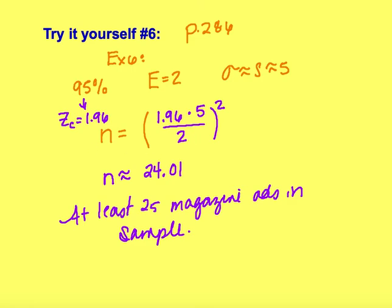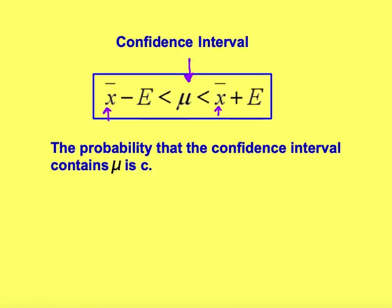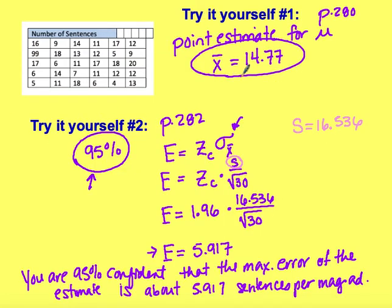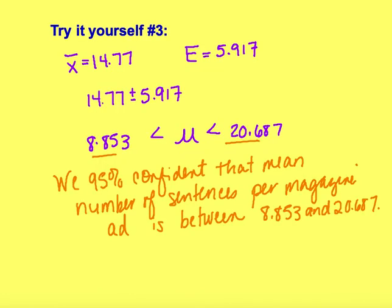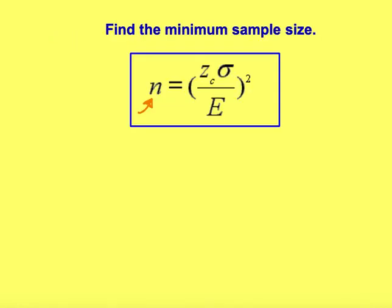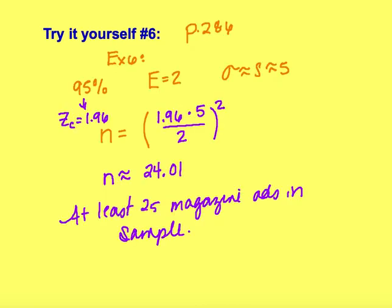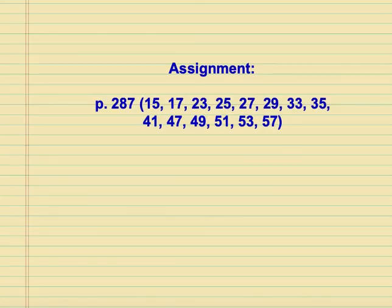To recap what we've done: we calculated our point estimate by finding the mean, then found our error by taking our confidence level Z times the standard deviation divided by the square root of n. We transferred that into a confidence interval by adding and subtracting the error from our sample mean. Then we calculated what n should be using our standard deviation, level of confidence, and desired error. I'll put a few practice problems on Google Classroom for you to try.